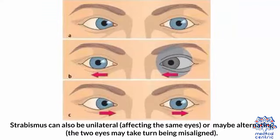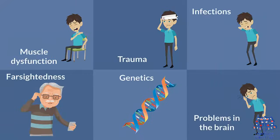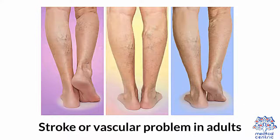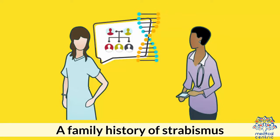Strabismus can also be unilateral, affecting the same eye, or may be alternating, where the two eyes take turns being misaligned. Causes include muscle dysfunction, trauma, infections, farsightedness, genetics, problems in the brain, stroke, or vascular problems in adults.